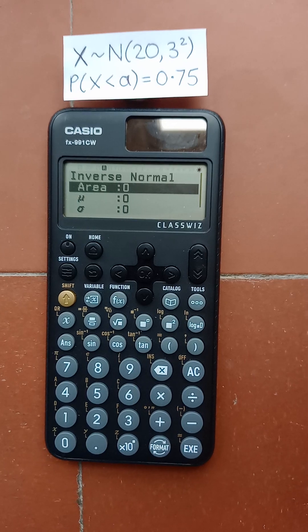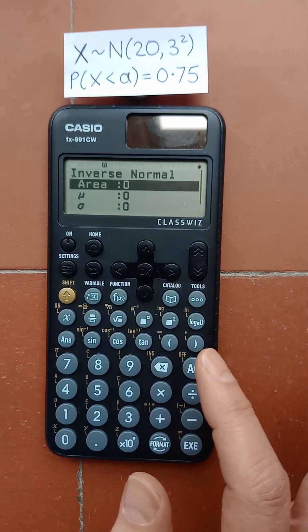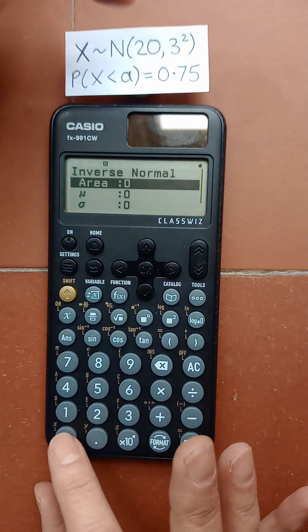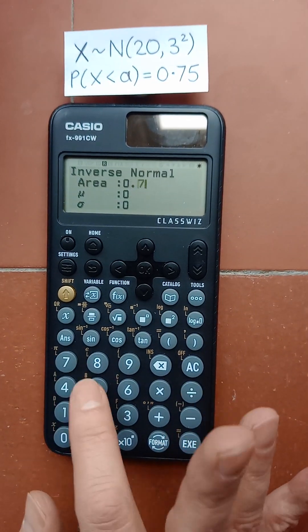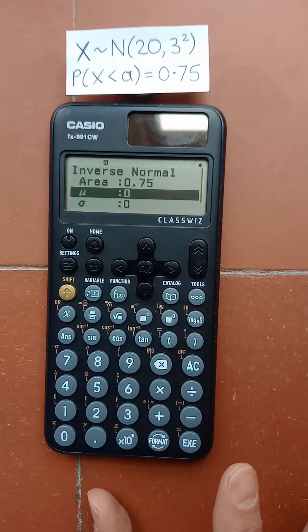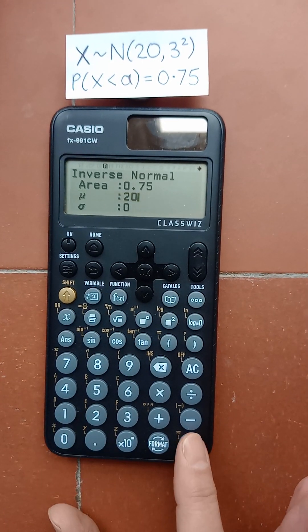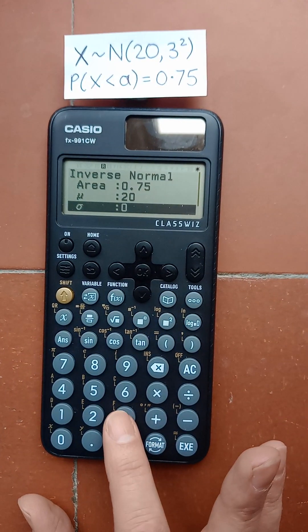Now you have to enter in the values. So we've got the area is the probability 0.75. You've got the mean 20. Standard deviation 3.